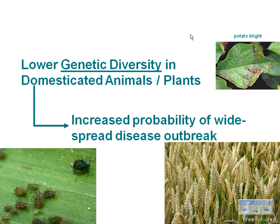Objective seven: describe how lack of genetic diversity impacts crop production. This directly increases the probability of widespread disease outbreak. When we lower genetic diversity, we have a uniform makeup of a crop to get the highest yields, or we farm a monoculture — growing the same crop or plant throughout.